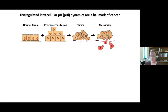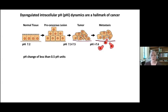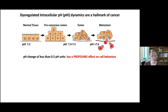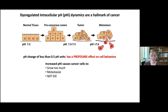Throughout this process, intracellular pH, or pHi, increases by about 0.5 pH units, which is really small when you consider that the pH scale goes from pH 0 of battery acid to pH 14 of lye. But it has a profound effect on cancer cell behaviors. This increase in pH causes cancer cells to grow too much, to metastasize, and it makes it so they cannot die.